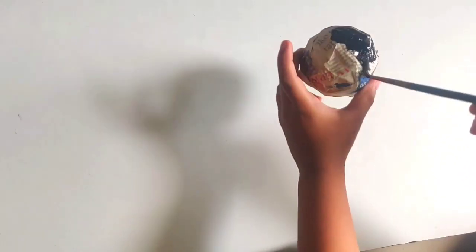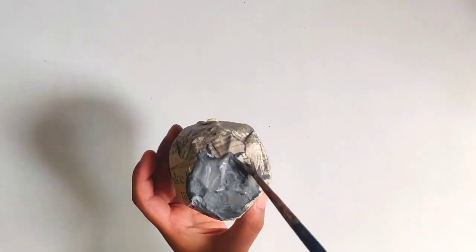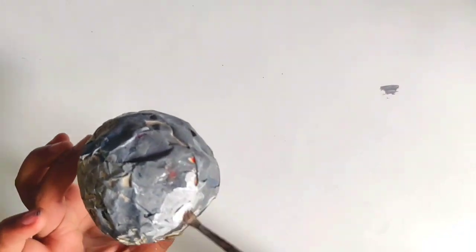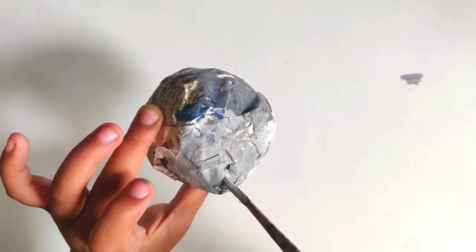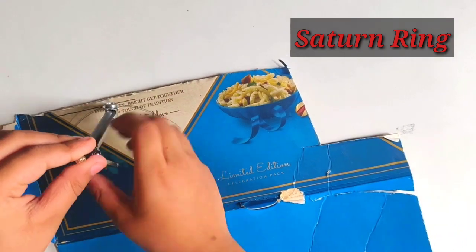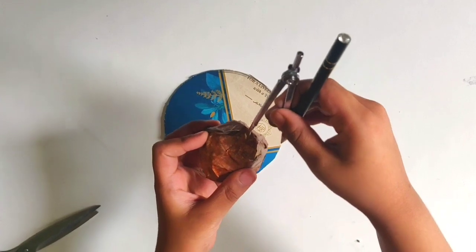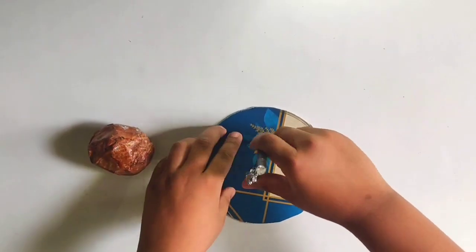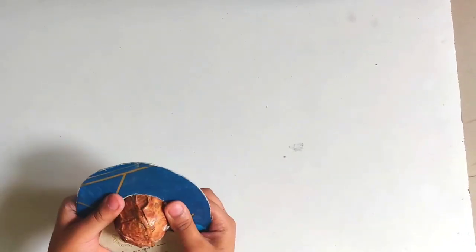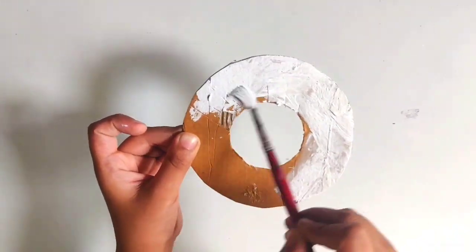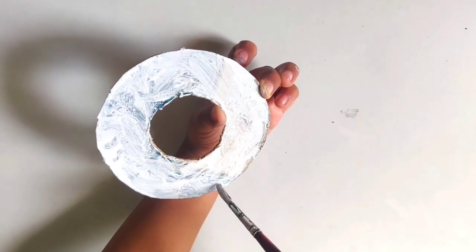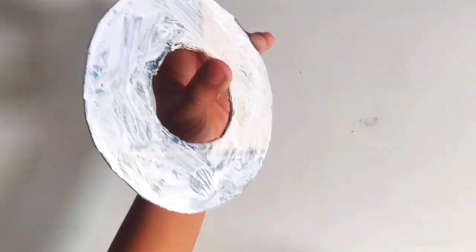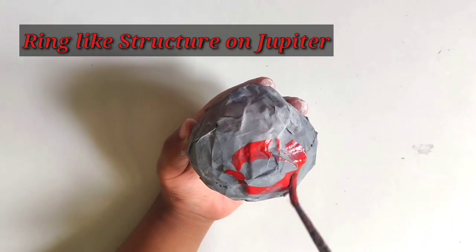I am coloring this ball as a Jupiter planet. In the same way, color all other planets. Take a cardboard to make a ring around the Saturn. Let's check the size of the ring of Saturn is correct or not. Paint the ring with white color. Make a ring like structure with red color on Jupiter.